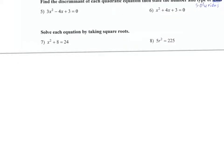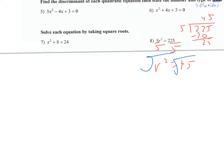Next we're going to solve by taking square roots. First, I isolate the squared term by dividing by five, since it's multiplying. 225 divided by five is 45, so R squared equals 45. Taking the square root of both sides, I break down 45 as nine times five, and nine is three times three, so R equals plus or minus three radical five.